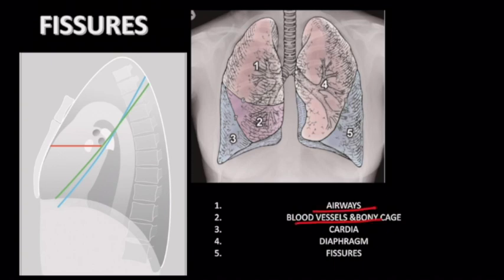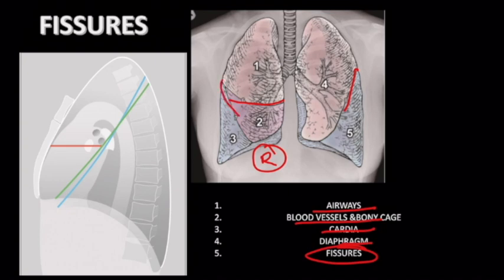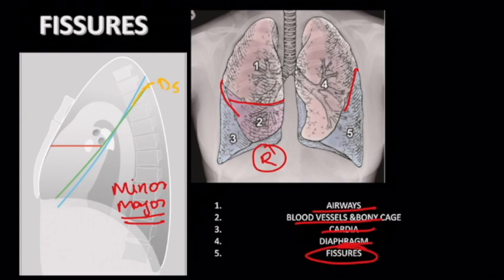Now moving to F for fissures. In the frontal radiograph, we can normally see only the minor fissure, and only on the right side; the oblique fissure is very rarely seen. In lateral radiograph, we can make out both minor and major fissures. The major fissure, also known as the oblique fissure, goes obliquely from the D5 vertebra and terminates on the diaphragm several centimeters away from the sternum.